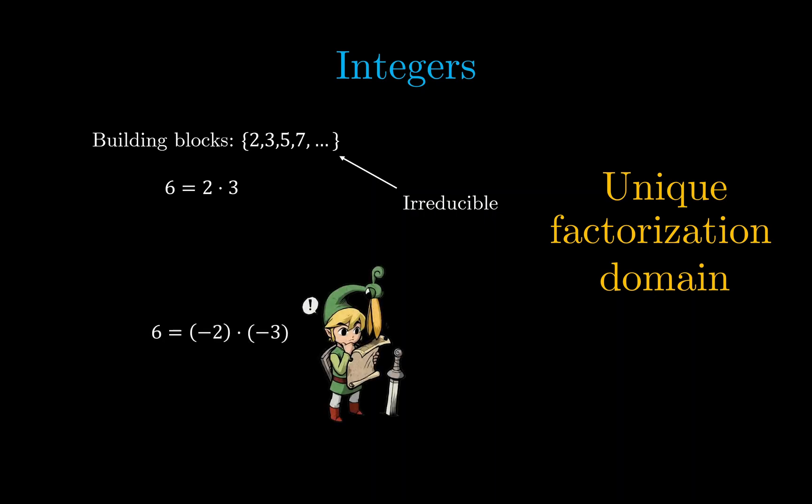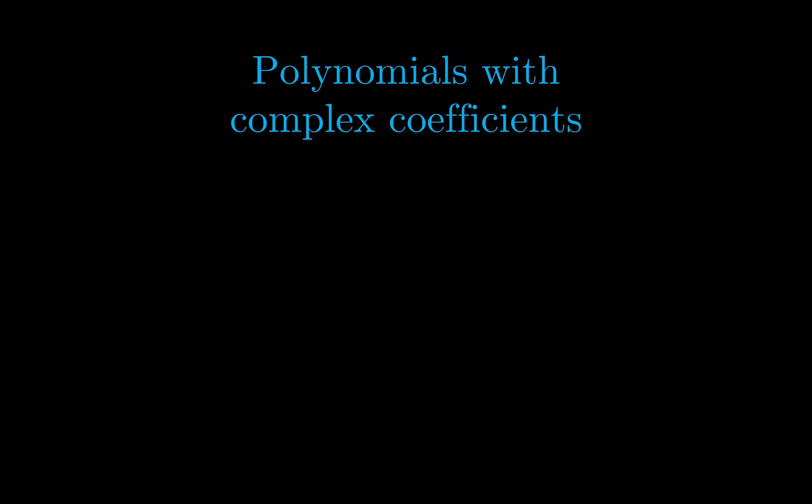But wait, you might say that I can also write 6 as -2 times -3, and both -2 and -3 cannot seem to be broken down further. Indeed, the negative primes are also irreducible elements. But we actually make an identification to say that p and -p are sort of the same thing, because we can convert one into another easily through multiplying some integer, in this case multiplying by -1. So after defining which representatives are considered the same, uniqueness is actually defined up to some choice of representative among same irreducibles, and also up to some choice of ordering of the elements.